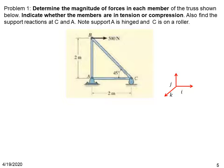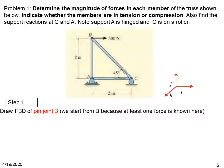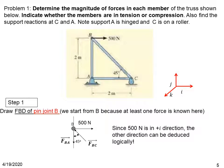We are going to use the method of joints to solve this problem. The first step is to start with a joint where some forces are known. Since pin B is subjected to the known 500 newton force, we use this joint for the initial analysis. The free body diagram of the pin at joint B is shown in this figure.